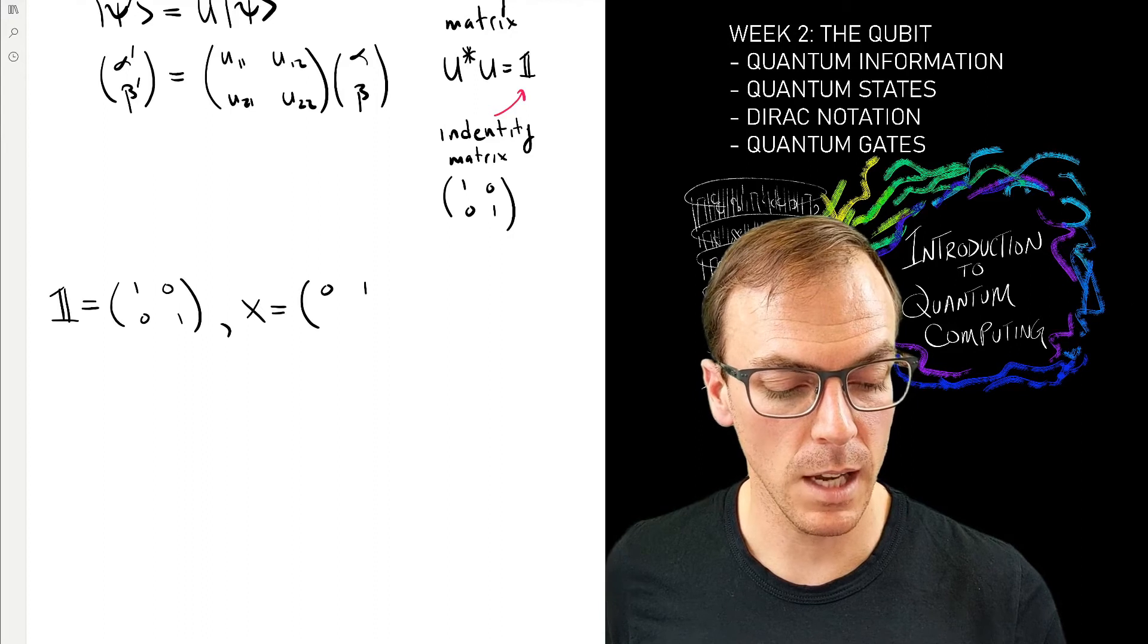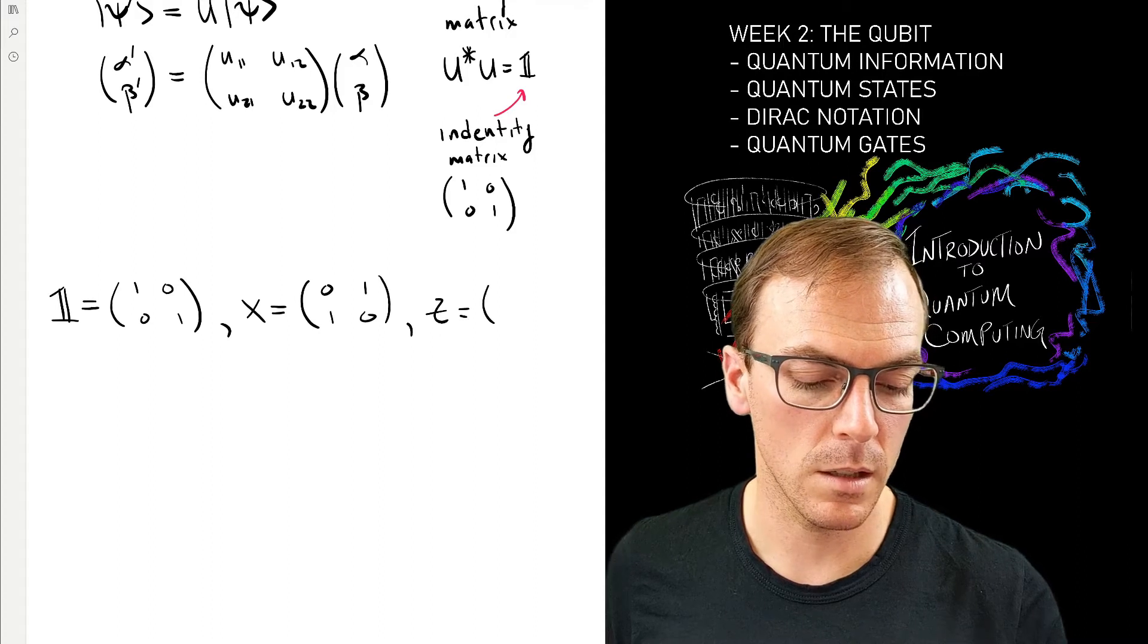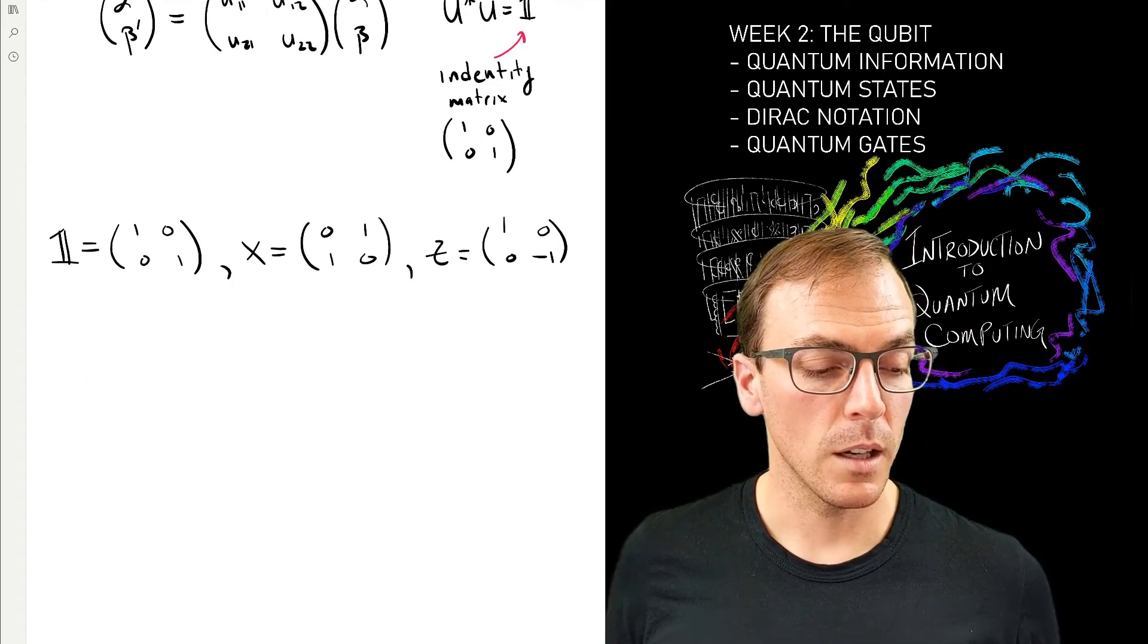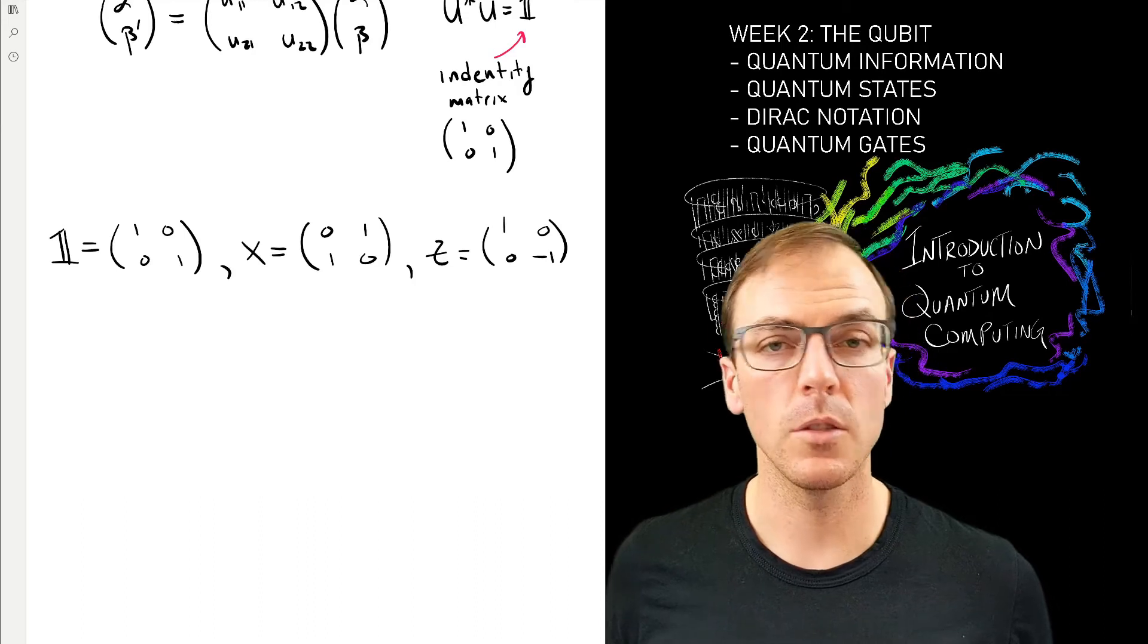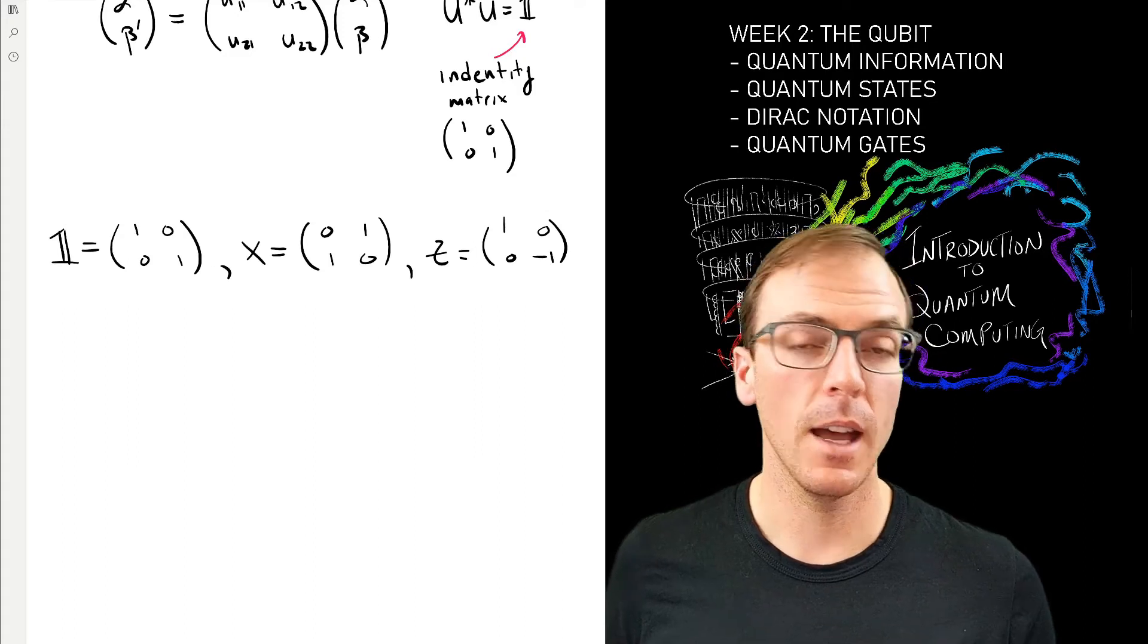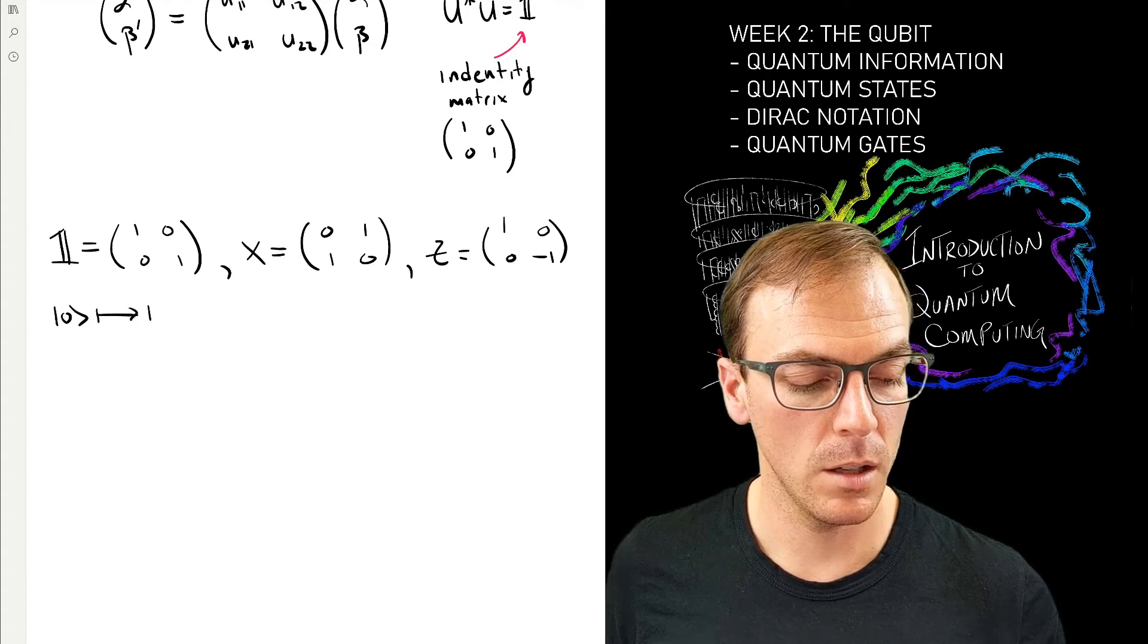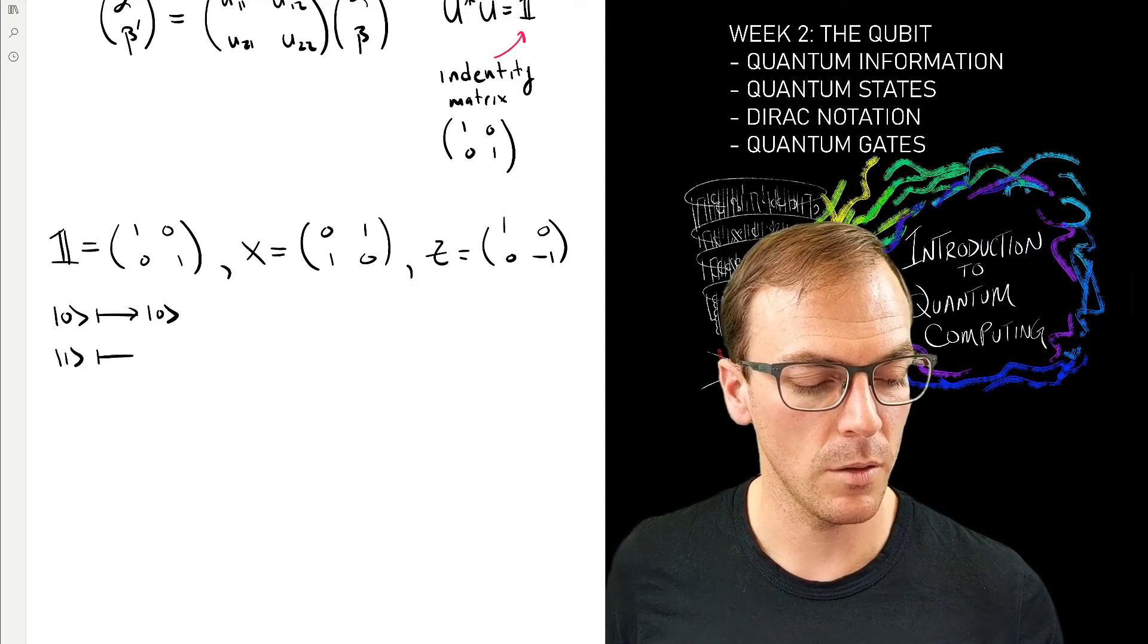We have what's called the X gate and another one that we'll look at is the Z gate. In linear algebra, we can specify matrices either completely or in terms of what they do to a particular basis. We'll try to work always in the computational basis, so we can specify each of these as how they change each element of the computational basis.